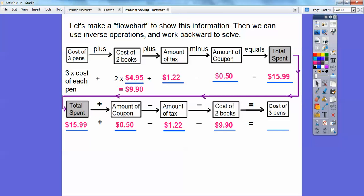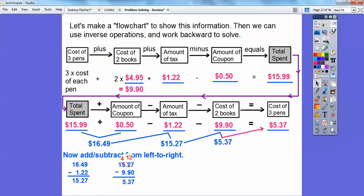And then if we add and subtract all those, that's going to equal how much all three pens cost. So let's just add and subtract from left to right. $15.99 plus $0.50 is $16.49 minus $1.22 is $15.27. You can see I did that over here. $15.27 minus $9.90 is going to get us $5.37.